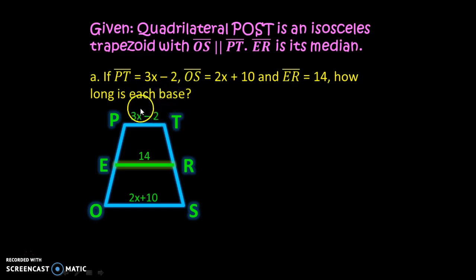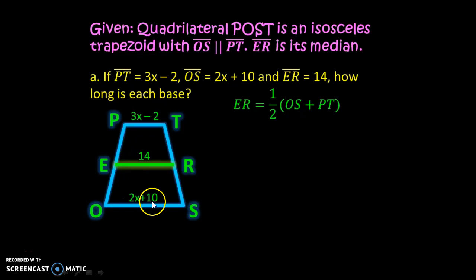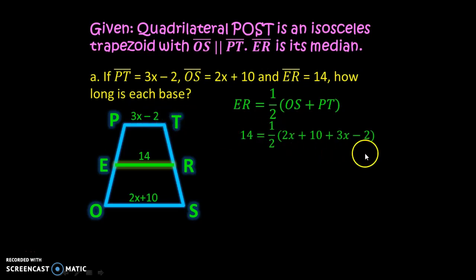We want to find the two bases, PT and OS. Since we have the median, we apply the formula: ER equals one-half of OS plus PT. We know ER is 14, OS is 2x plus 10, and PT is 3x minus 2.